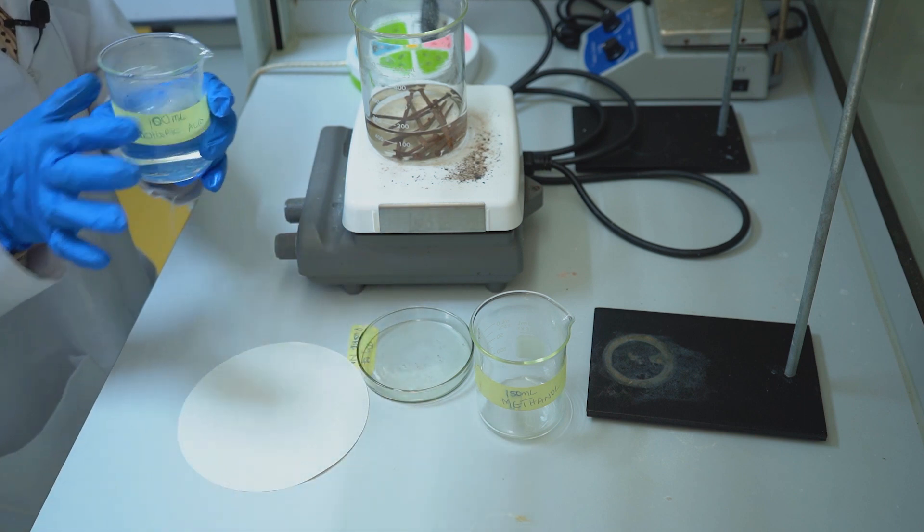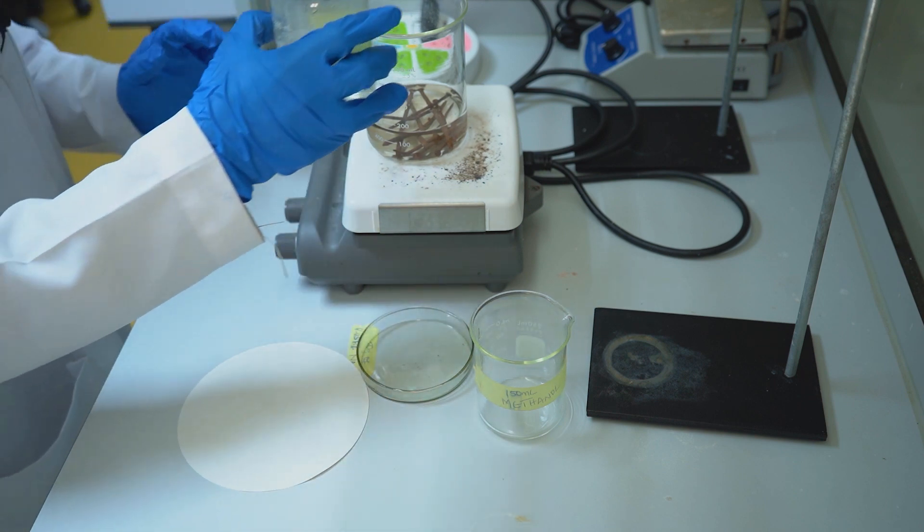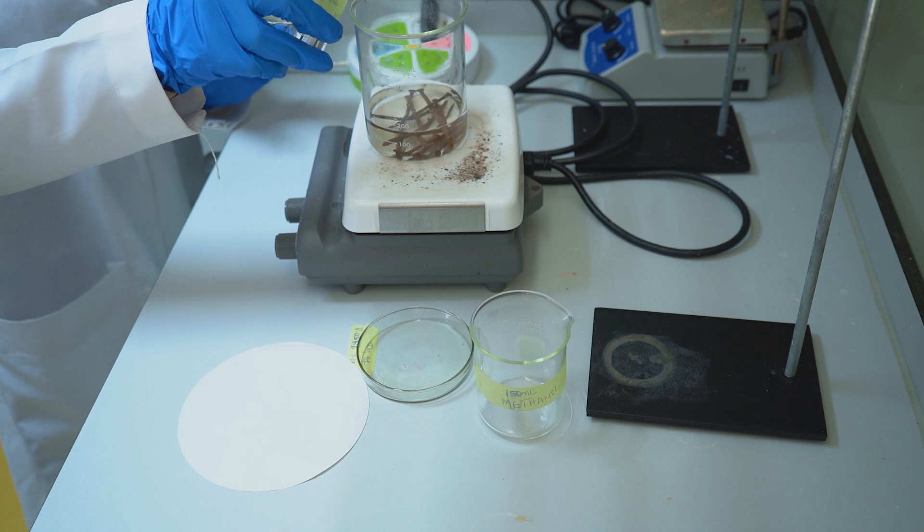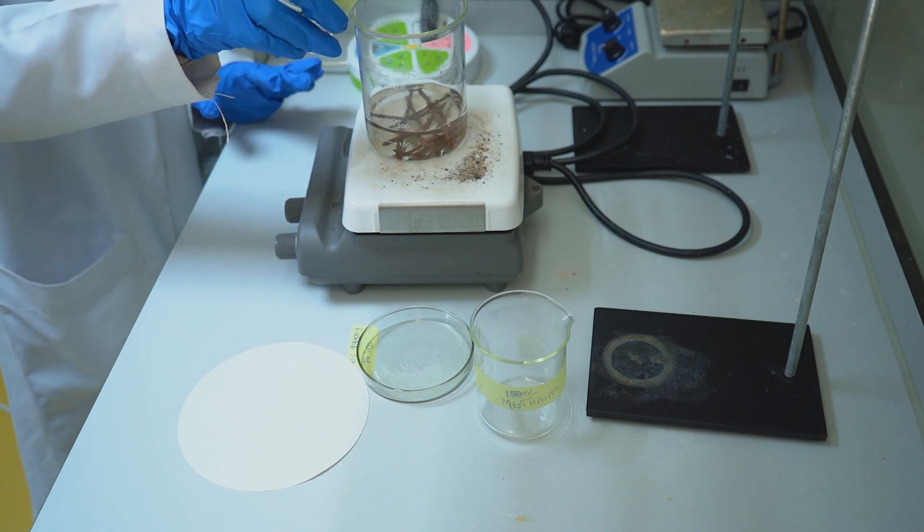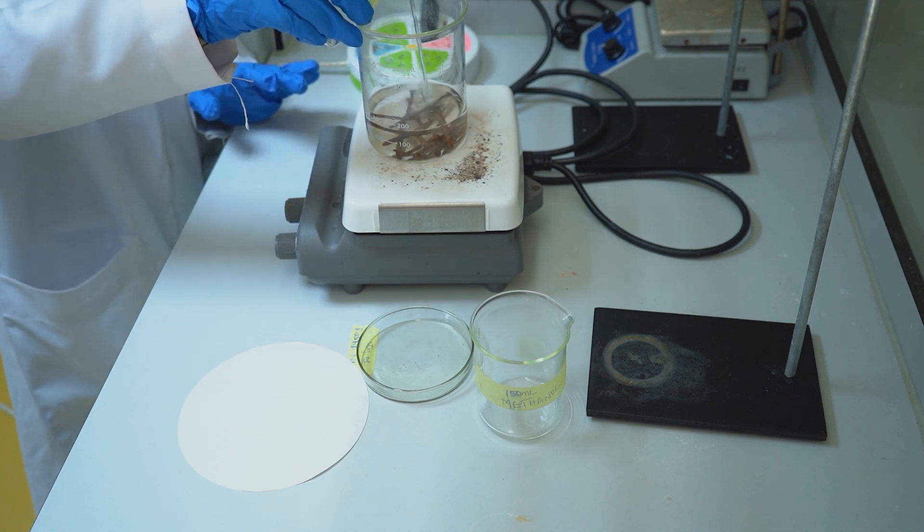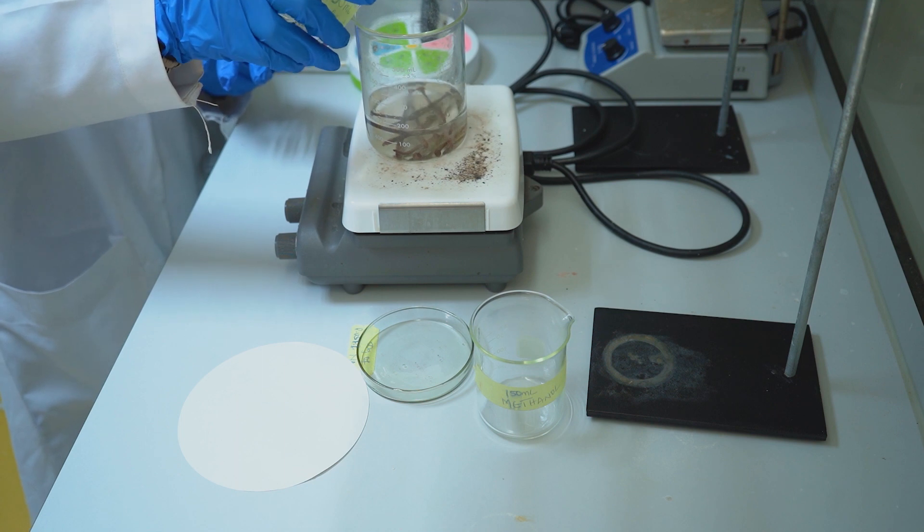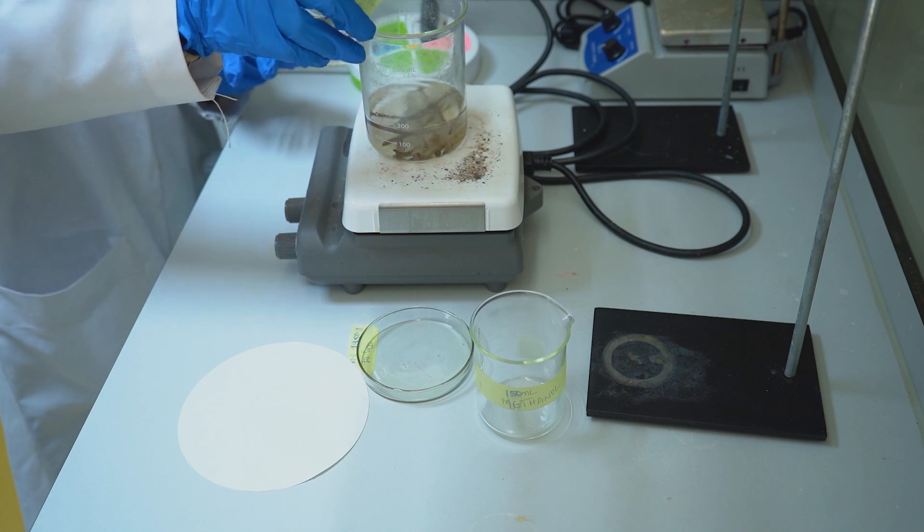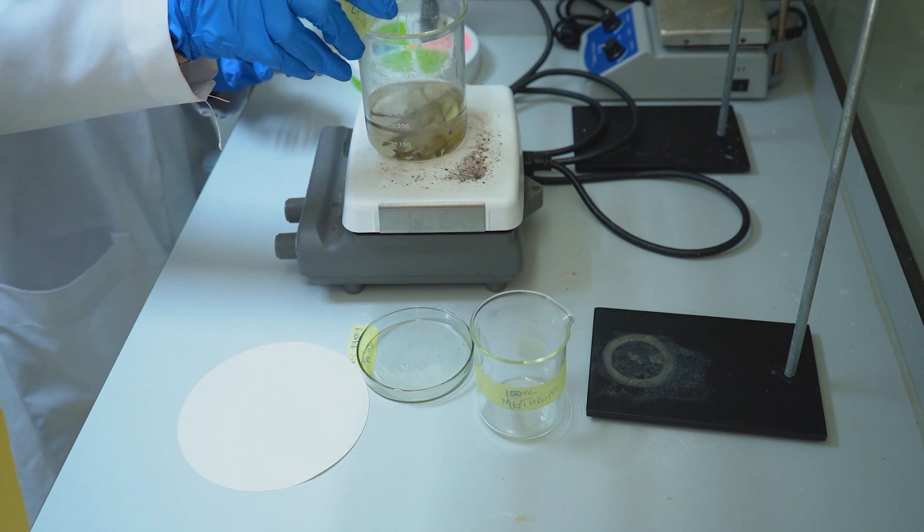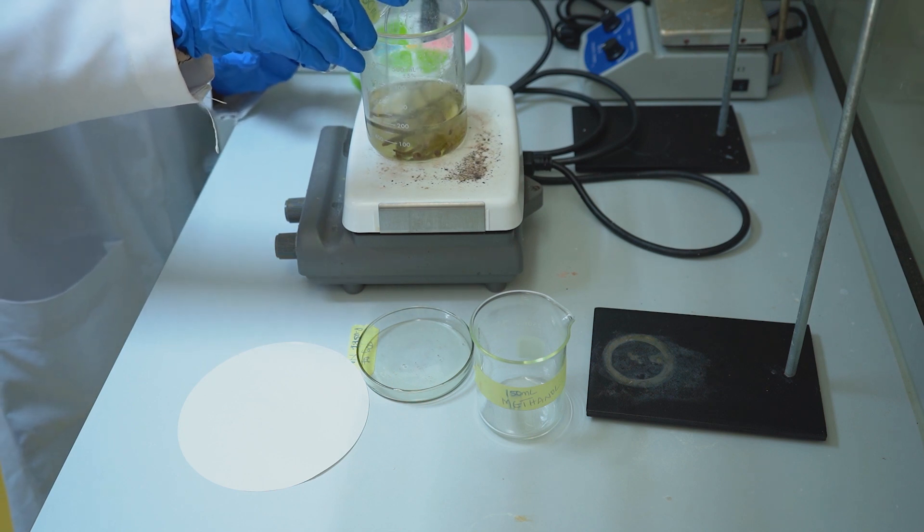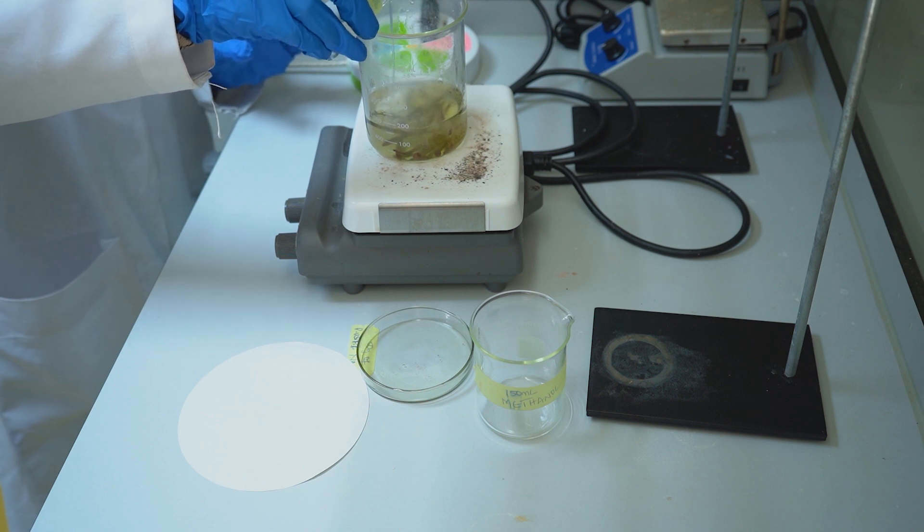Carefully add the 100 ml hydrochloric acid dropwise. Notice some bubbles. The solution is gradually turning into a lemon color.